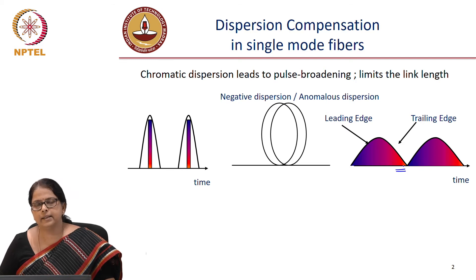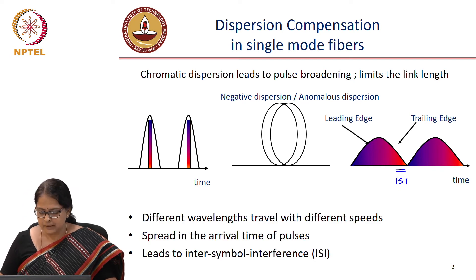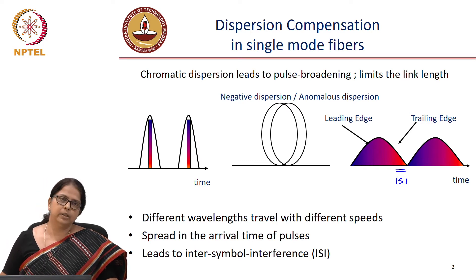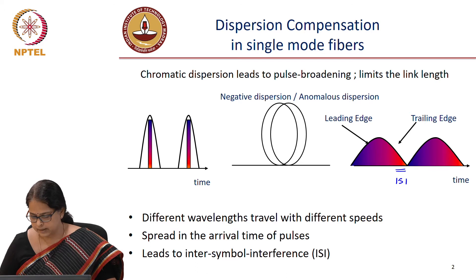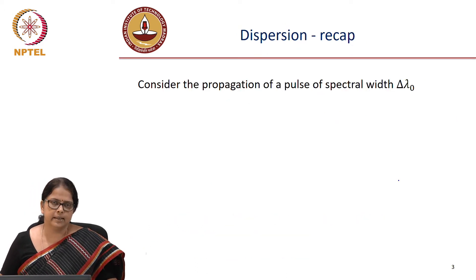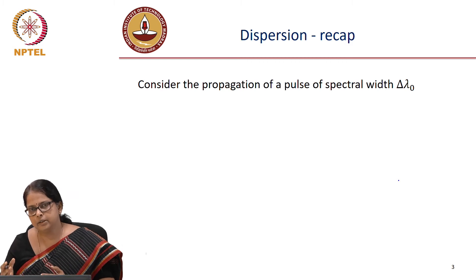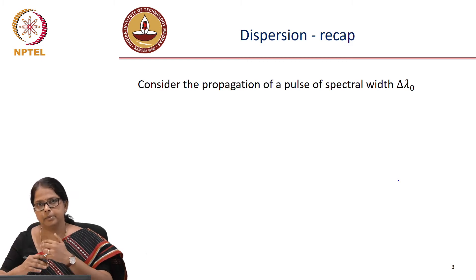In the time domain, the pulse broadens and this is what we refer to as ISI, or inter-symbol interference. The different wavelengths travel at different speeds, so there is a spread in the arrival time of the pulses, leading to ISI. We want to quantify this ISI — the delta tau — so that we can find out how to reverse the process, to compensate for dispersion.